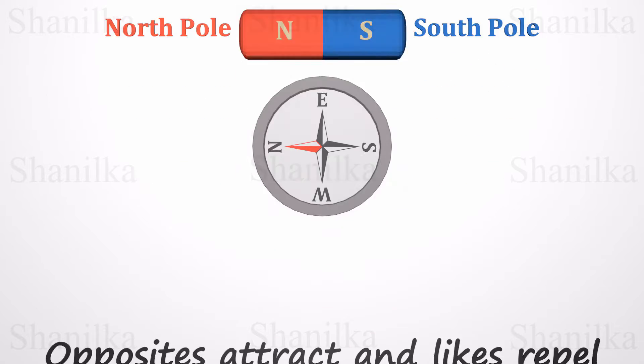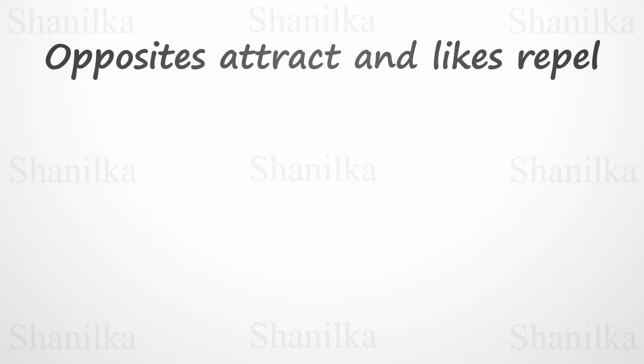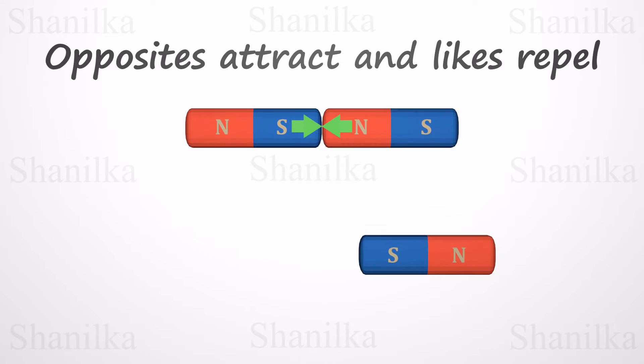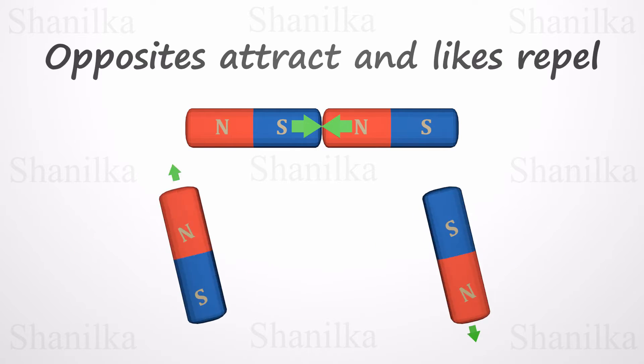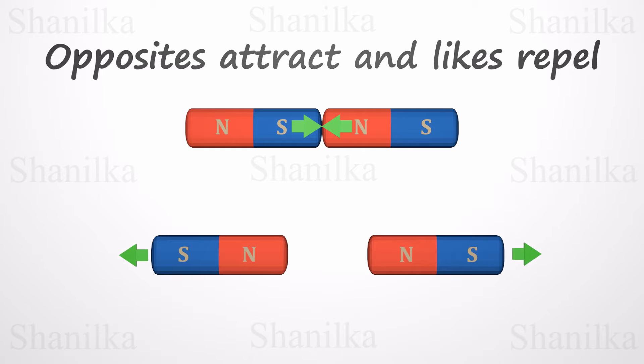Another interesting property of a magnet is opposites attract and likes repel. If you have two bar magnets with their ends marked north and south, then one magnet's north end will attract the other's south end. On the other hand, the south end of one magnet will repel the south end of the other, and also north will repel the north.